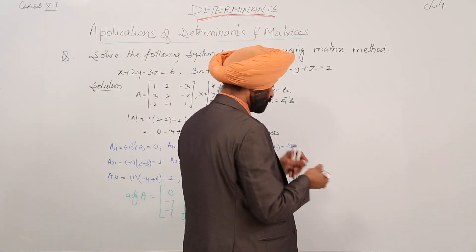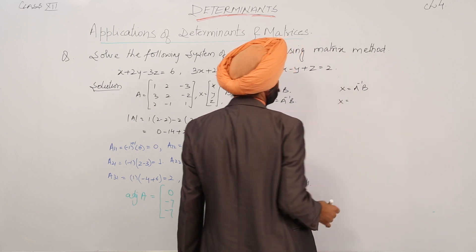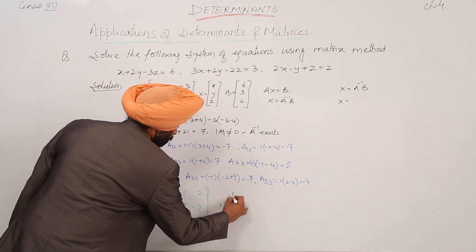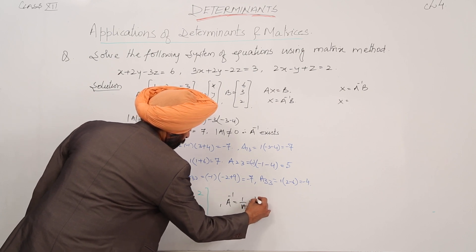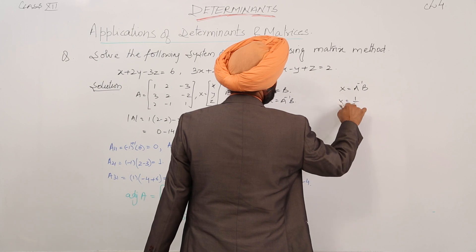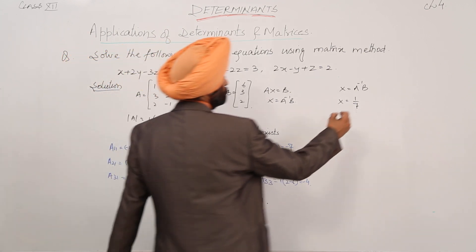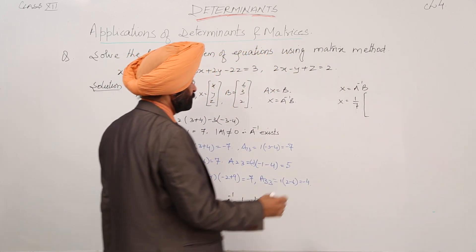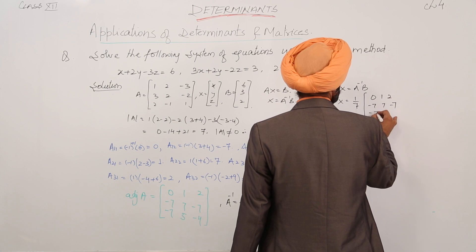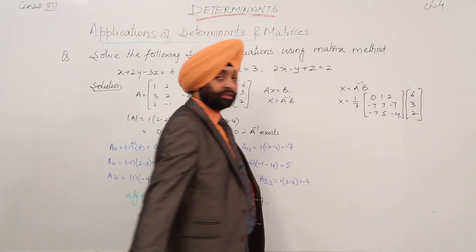For the inverse, A inverse is equal to 1 upon determinant of A, with adjoint A. So we are having 1 upon 7 because determinant is 7, then the adjoint part: 0, 1, 2; minus 7, 7, minus 7; minus 7, 5, minus 4. Multiplied with B, which is 6, 3, 2.